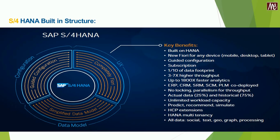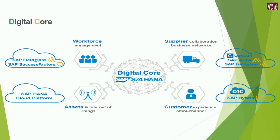Digital core is another beautiful feature of SAP S4 HANA. Nowadays, SAP S4 HANA incorporates IoT — Internet of Things — through which workforce management is handled on SAP SuccessFactors, supplier collaboration towards the business network is carried out by SAP Ariba, customer experience is managed through SAP Hybris, and finally assets are clearly monitored through IoT using the SAP HANA Cloud Platform.